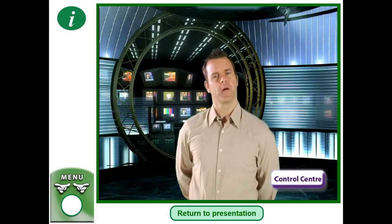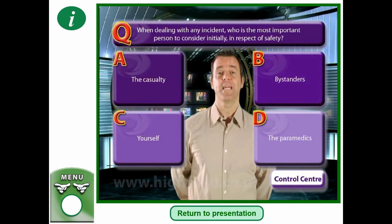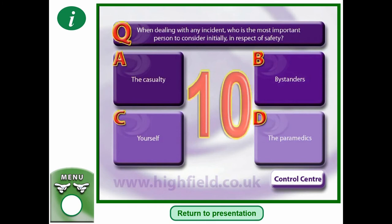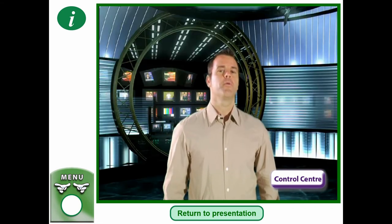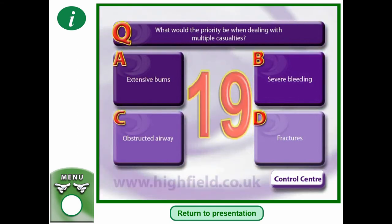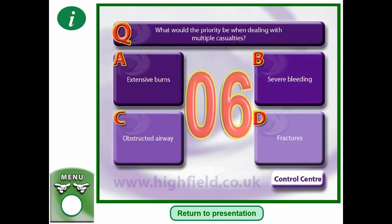When dealing with any incident, who is the most important person to consider initially in respect of safety? Is it: A — the casualty, B — bystanders, C — yourself, or D — the paramedics? Pause the video and decide who you think is the most important person. What would the priority be when dealing with multiple casualties? Pause the video and decide which you think would be the priority when dealing with multiple casualties. We looked at this on the last slide.